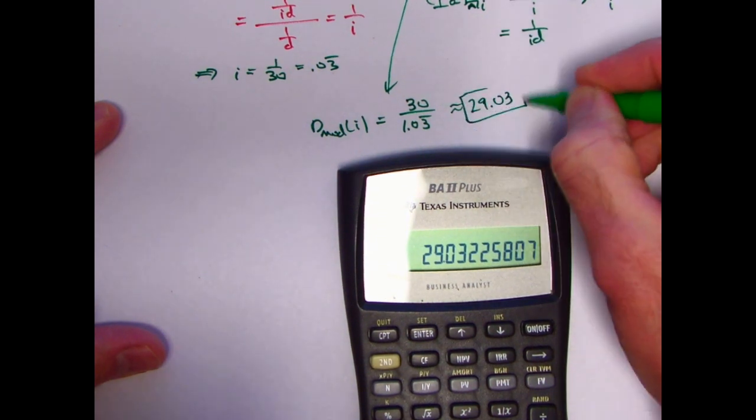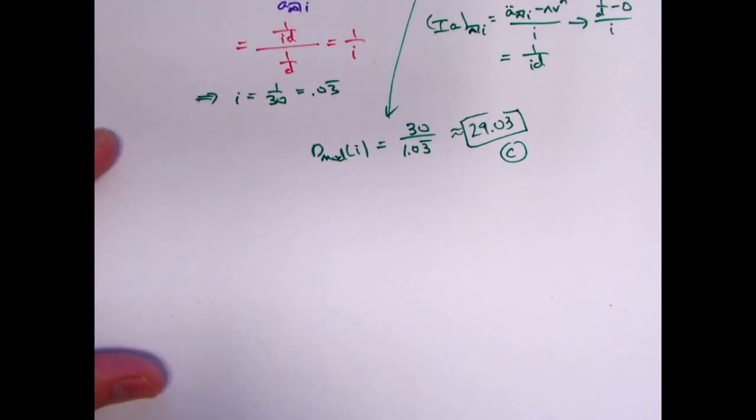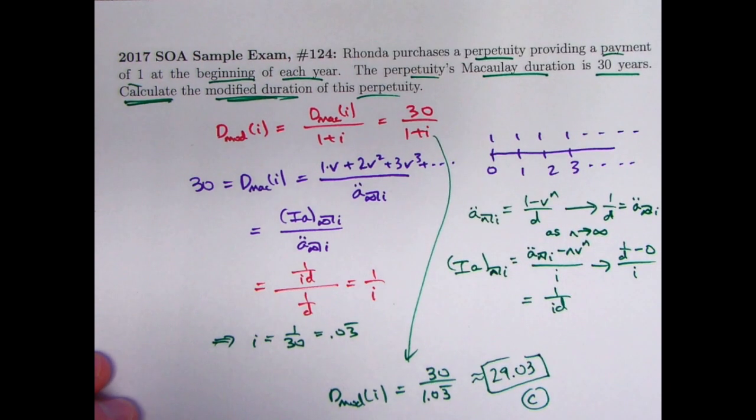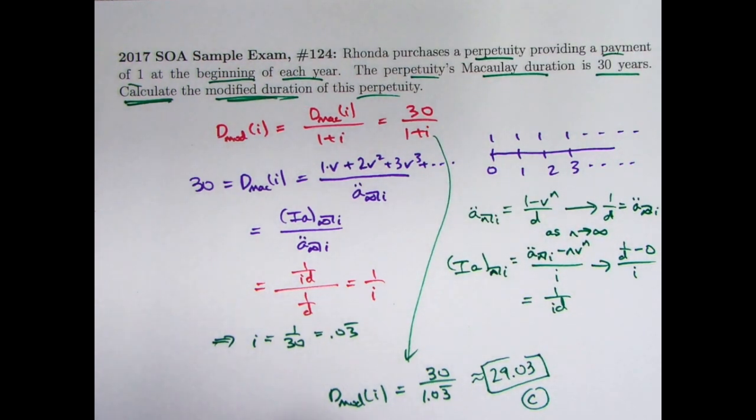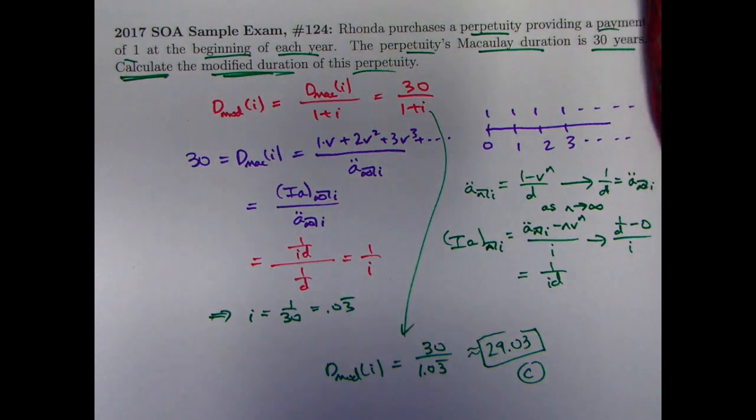And that is the correct answer. That happens to be choice C on the sample exam from 2017. We are again doing problem number 124 here. So you definitely can solve this problem, even though it feels like at first that you can't.